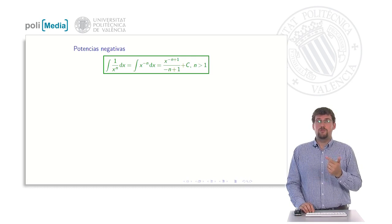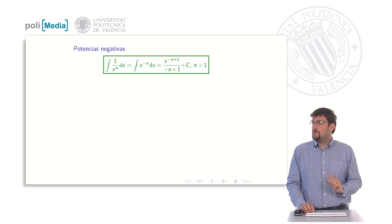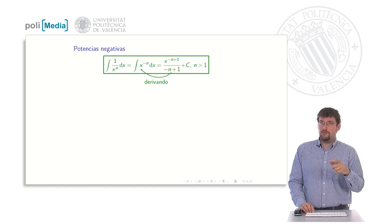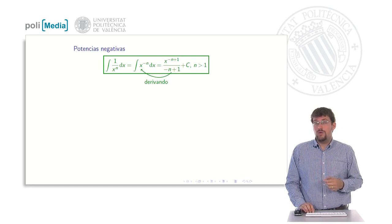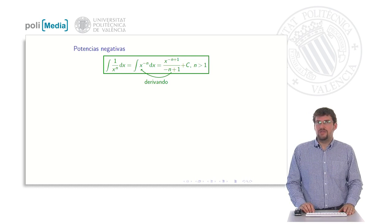And for this exponent, it will serve us exactly the same rule. We take the exponent, we add 1, we divide exactly by the newly obtained exponent, and we add the constant c. We observe again that if we derive, the exponent would go forward, it would go with the 1 below, and the 1 we had added would disappear. Then, indeed, the final result would be x power to minus n, and this is its primitive.